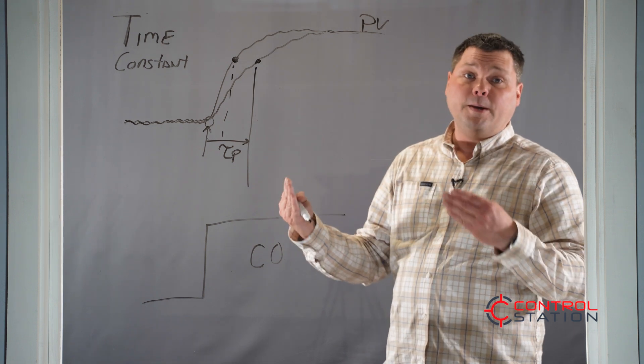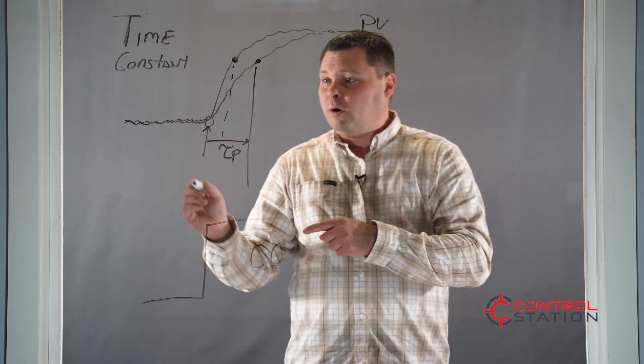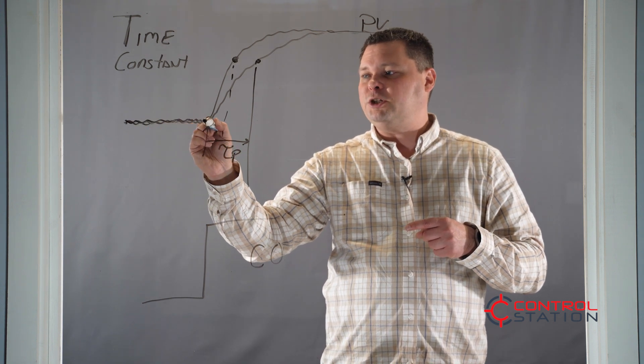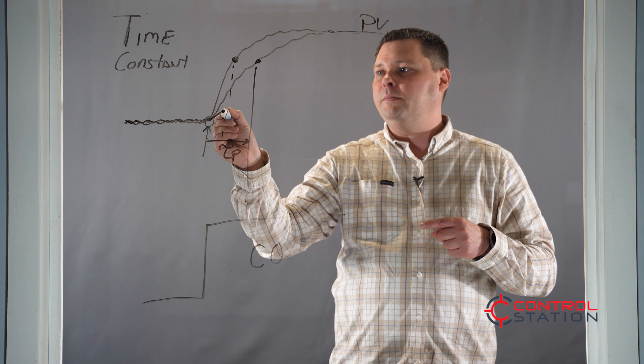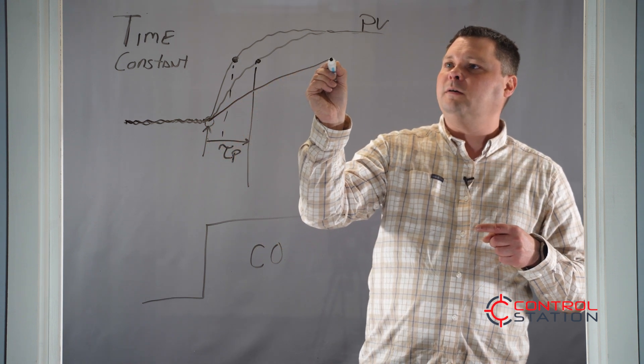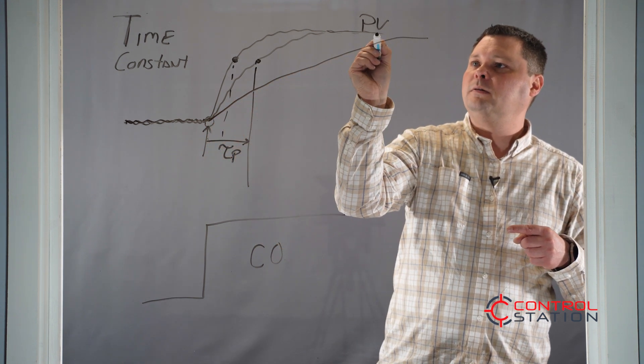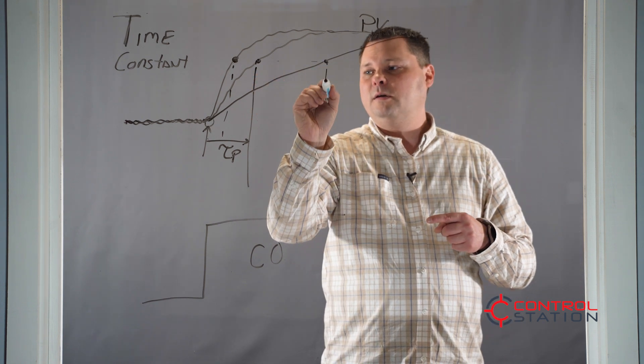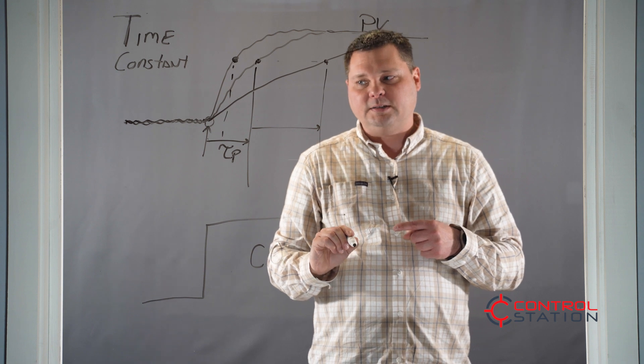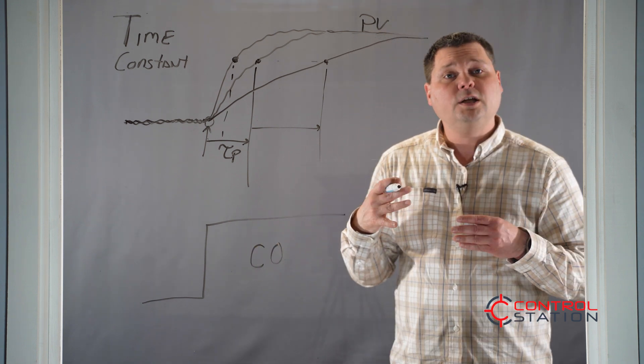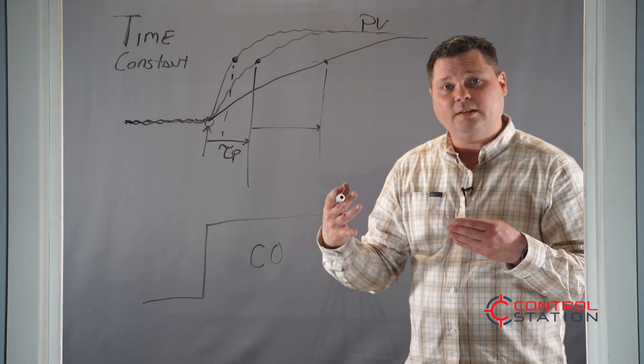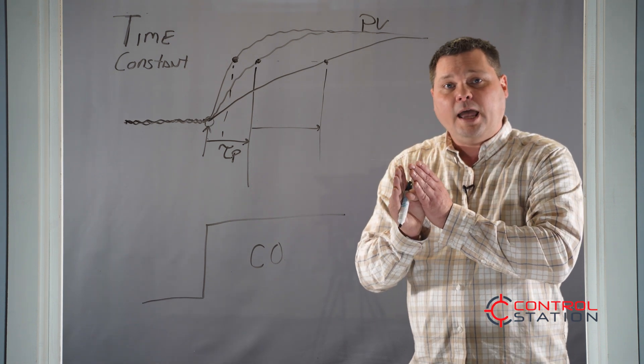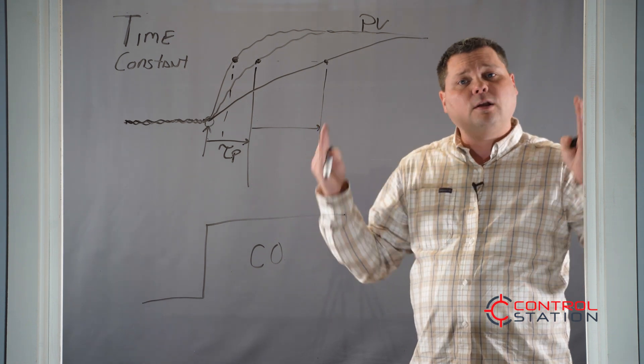You could have a very slow loop like a temperature controller, where if I had a slow process, it would still start at the same position, take off at the same time, but it may take a while to actually steady out, in which case the time it reaches 63% is there. And so you can see that's a much longer time constant. So the time constant is related to how fast does it get there? A smaller time constant is a faster process. A larger time constant is a slower process.